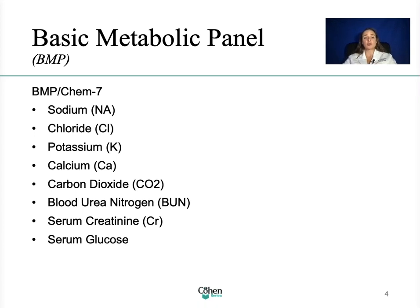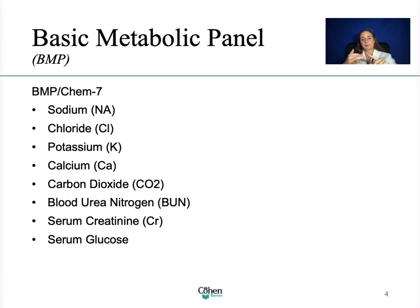GFR is the ability of the kidneys to filter blood. As it goes down, the serum creatinine goes up — so they're opposite. GFR is higher in men than in women. We can calculate the GFR using a calculation called MDRD, which uses sex, age, and the serum creatinine. At hospitals, once you order the basic metabolic panel, it automatically calculates the GFR for you.